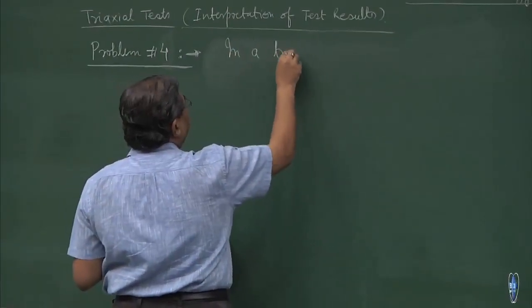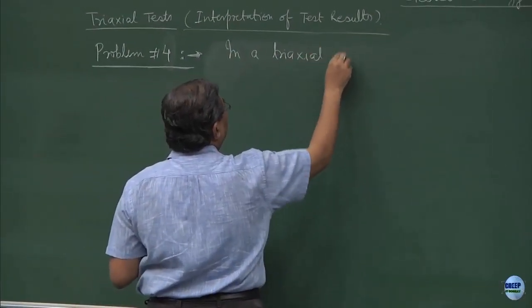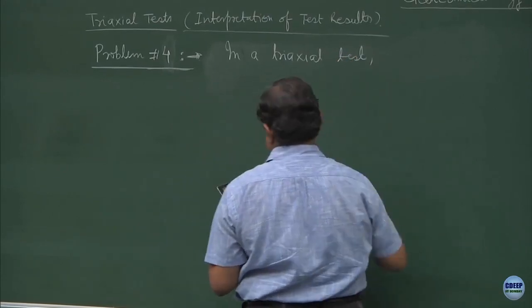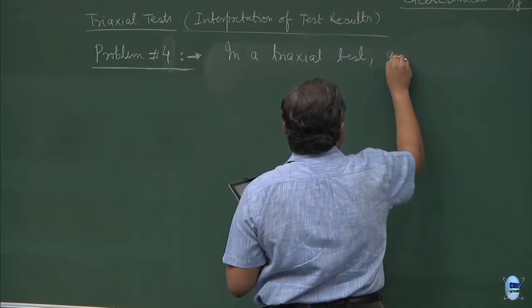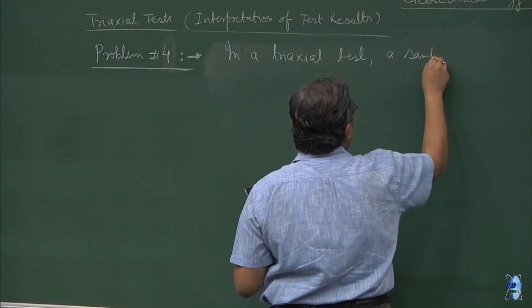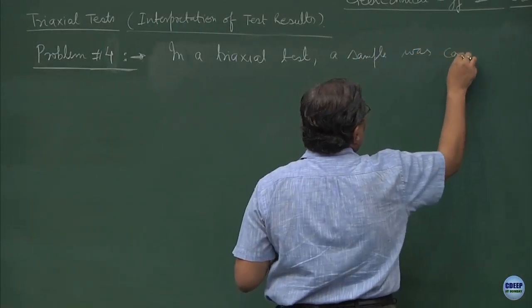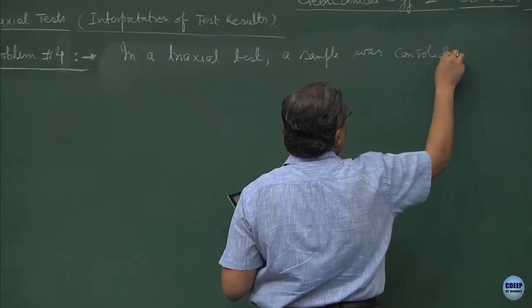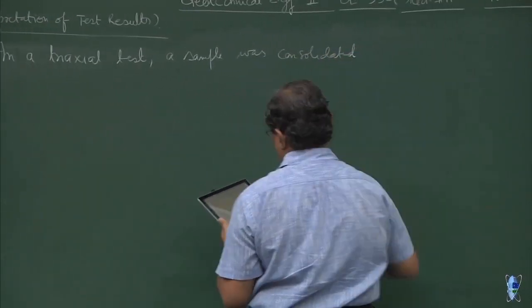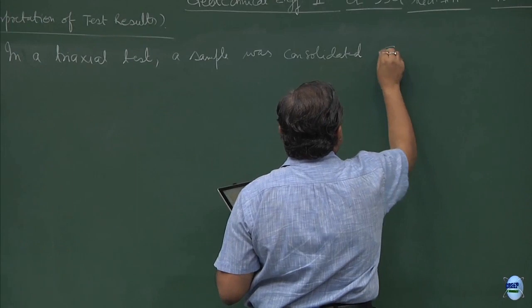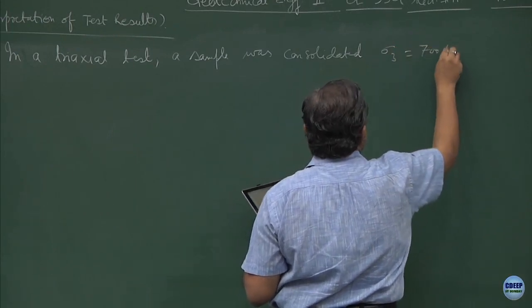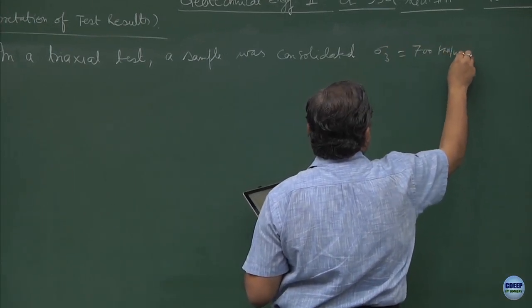In a triaxial test, a sample was consolidated at sigma 3 equal to 700 kilo Newton per meter square.